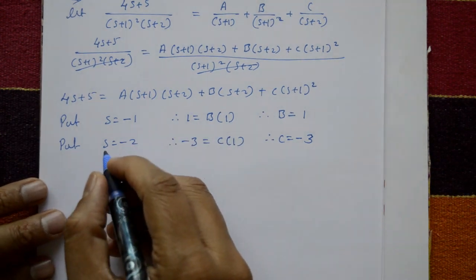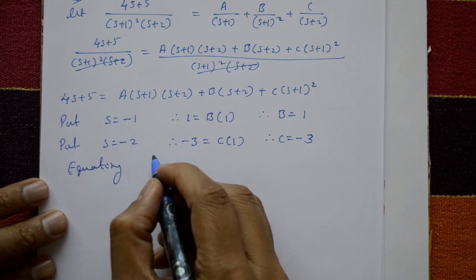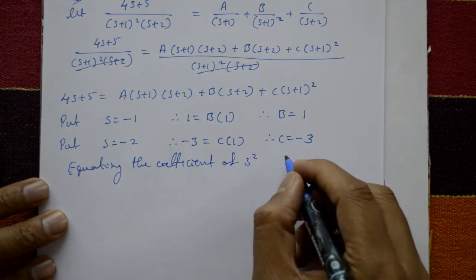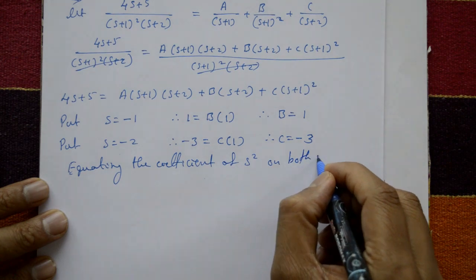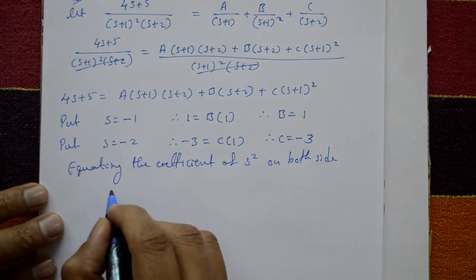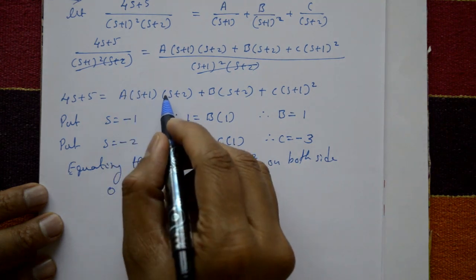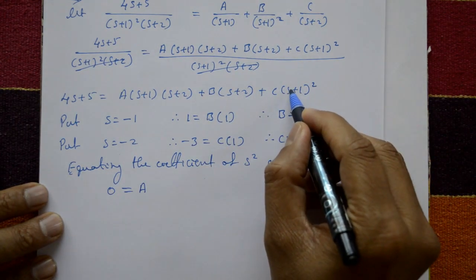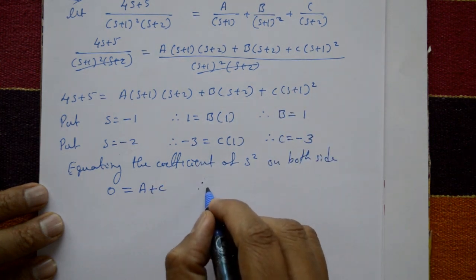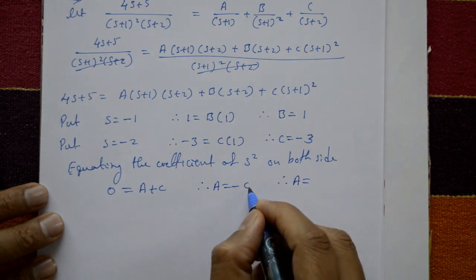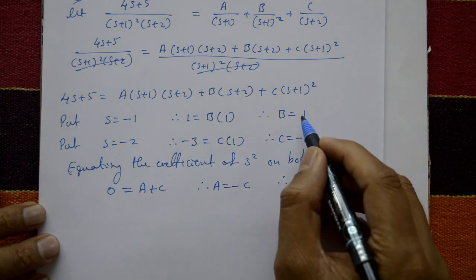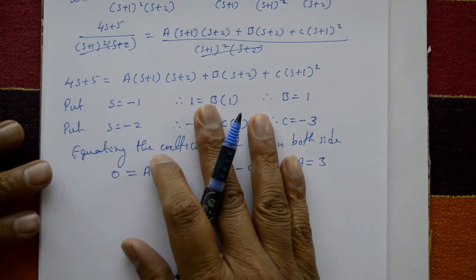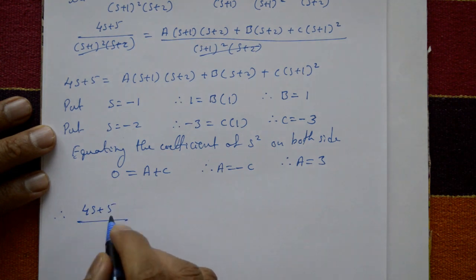Now it is not possible to put further s values, so we equate the coefficients. Equating the coefficient of s squared on both sides: the left-hand side has no s squared term, so 0 equals the coefficient of s squared on the right. From the first term, the coefficient of s squared is A; from the third term, the coefficient of s squared is C. Therefore A plus C equals 0, so A equals minus C equals minus(-3), which gives A equals 3.